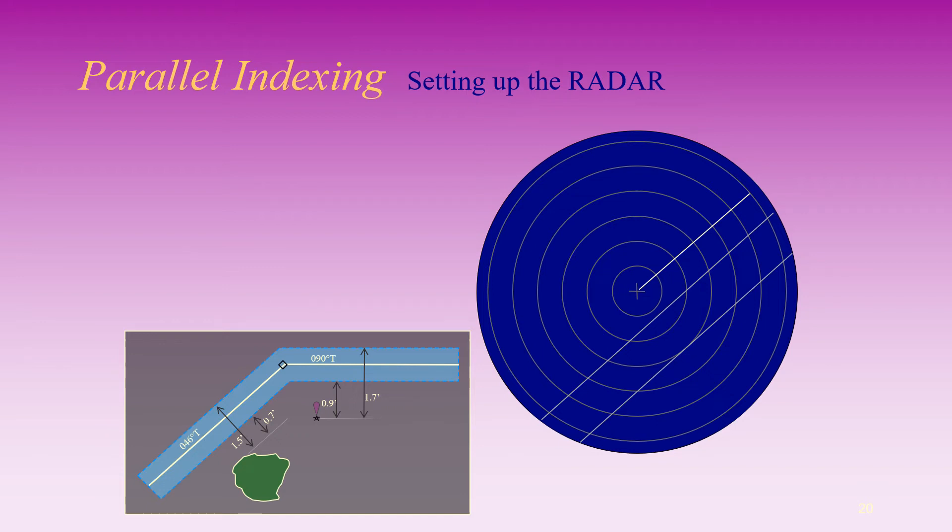Set up the two index lines for the second leg: 090 degrees true, 0.9 nautical miles and 1.7 nautical miles away respectively.